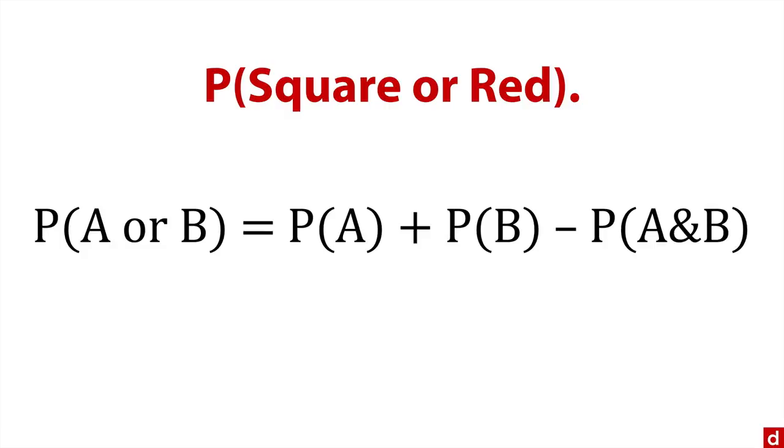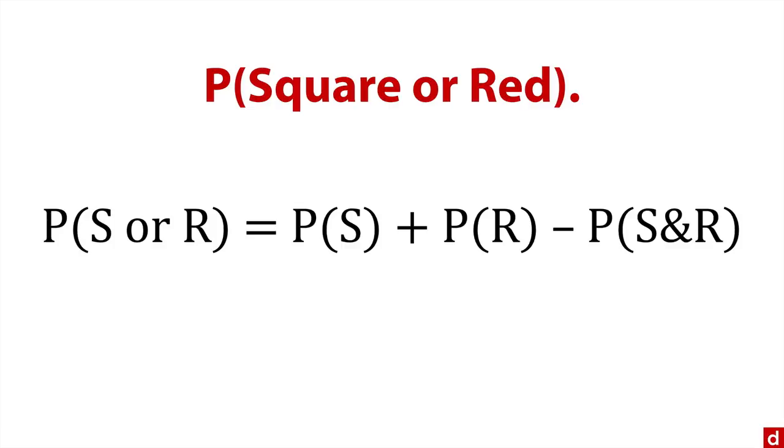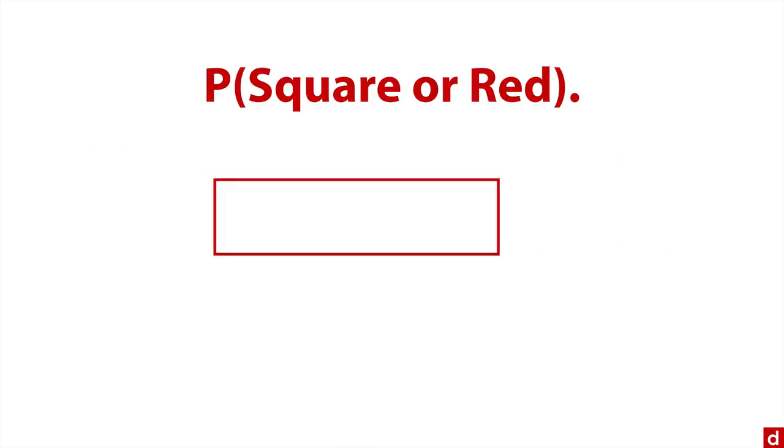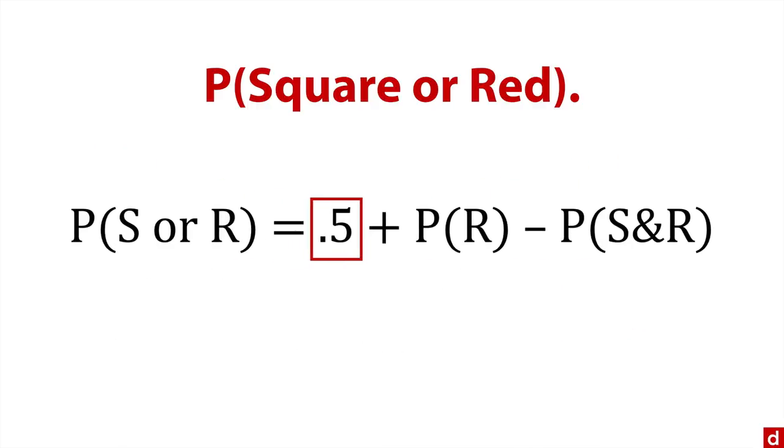Let's go back to our formula and change A and B to S and R for square and red. The probability that something is a square: we have five squares out of 10 shapes total. So we do 5/10, which reduces to 0.5.